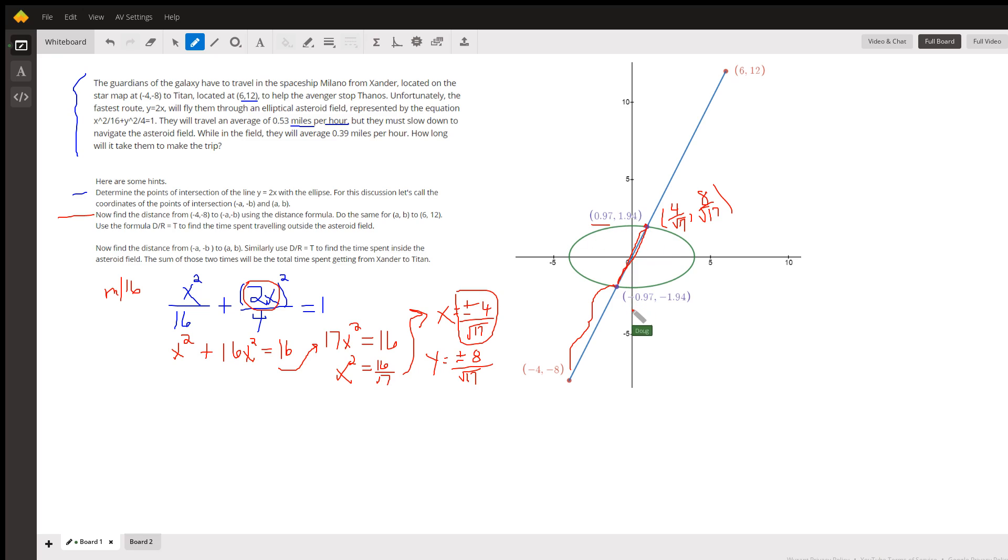Apply it against these two points, which will be using these coordinates right here. Divide that distance, whatever you get, by 0.39 to get the time t₂.